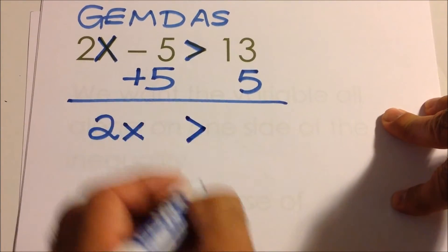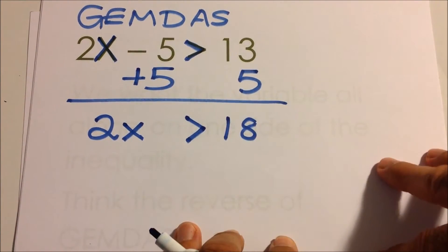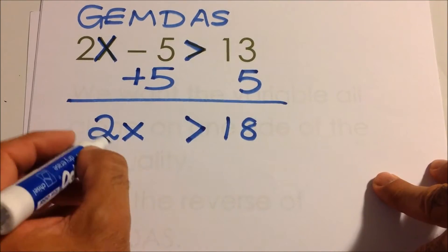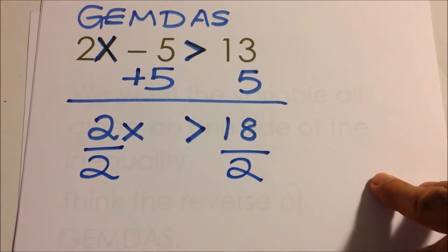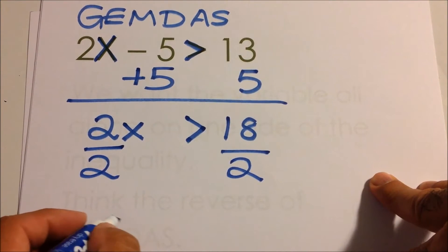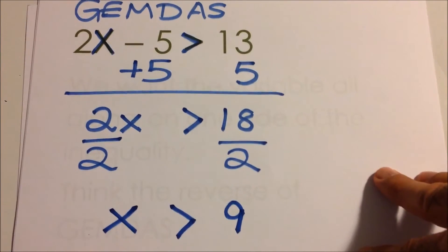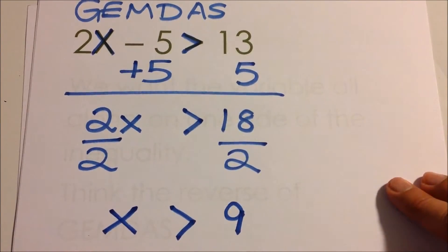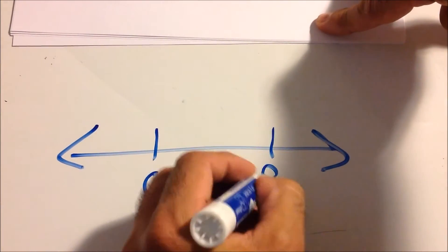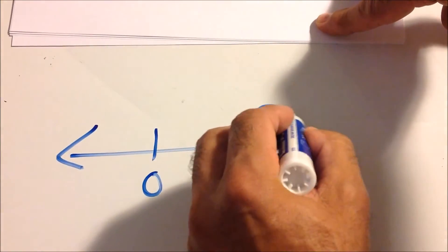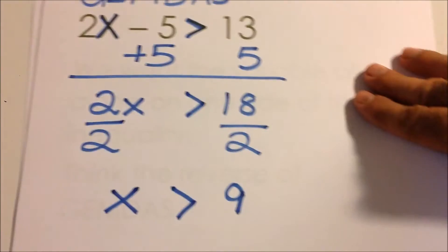So now we bring down the 2x and we see that 2x is greater than 18. The x is still not alone, so just like with linear equations, we're going to divide out the 2 on both sides. We're not dividing by a negative, so we're not flipping the sign. We say x is greater than 9. On the graph, here's 0, here's 9 — x is greater than 9, not equal to 9, so we're not filling it in.